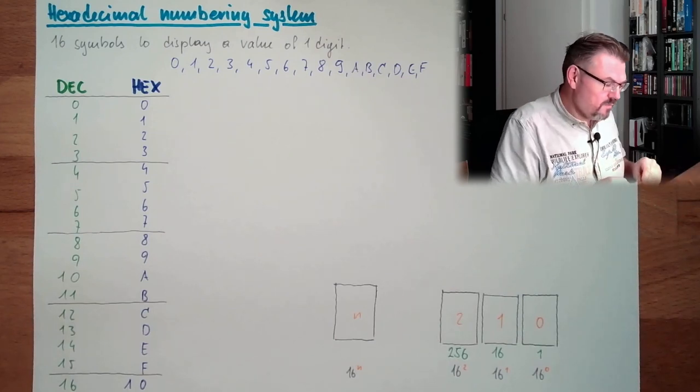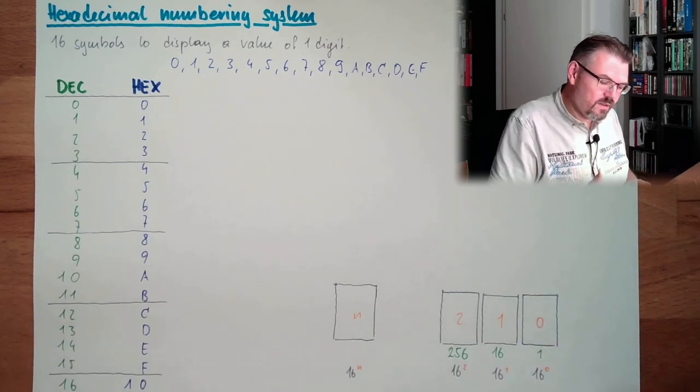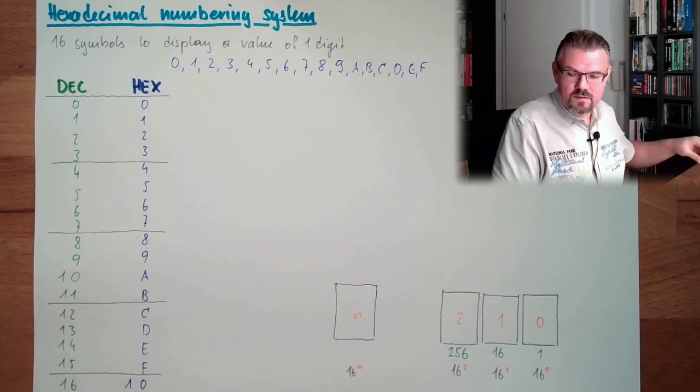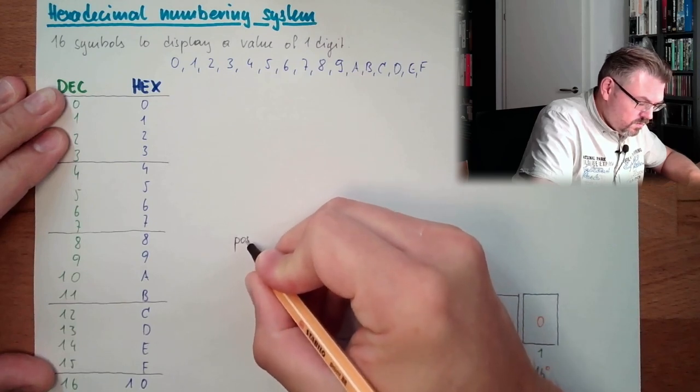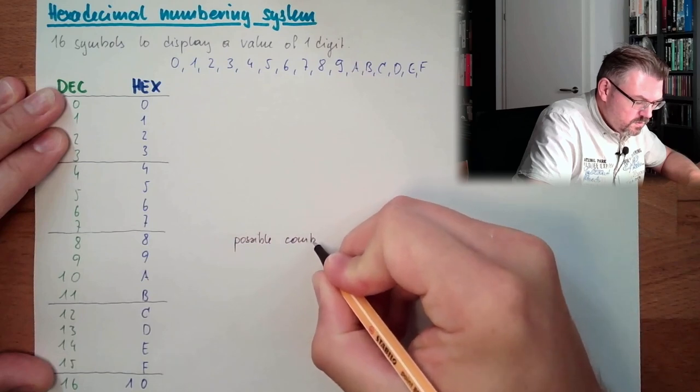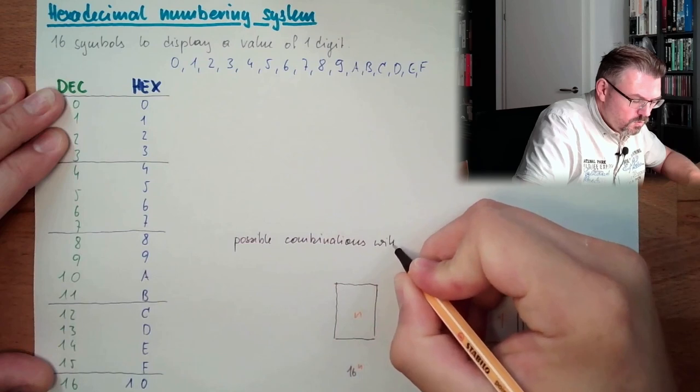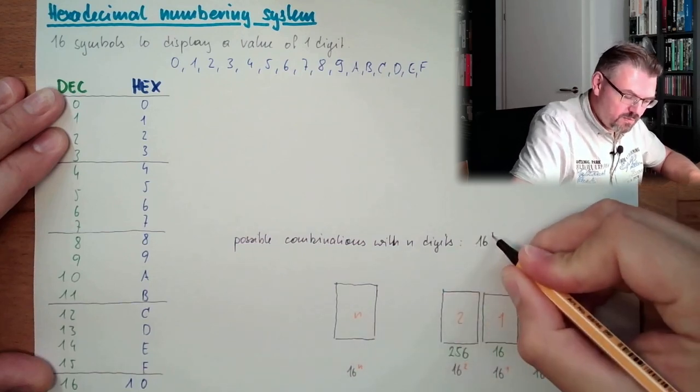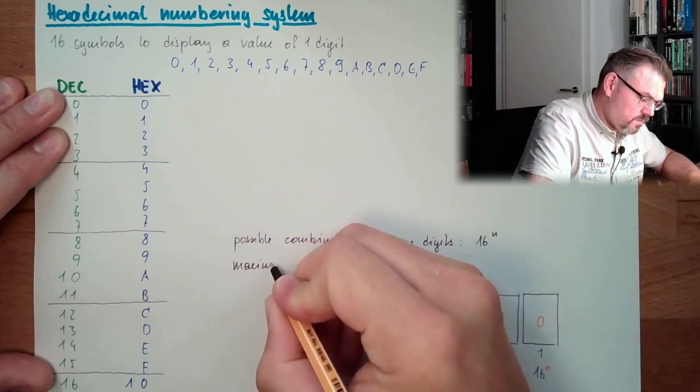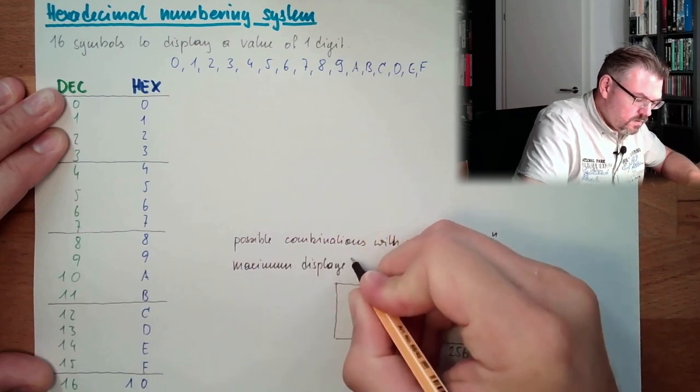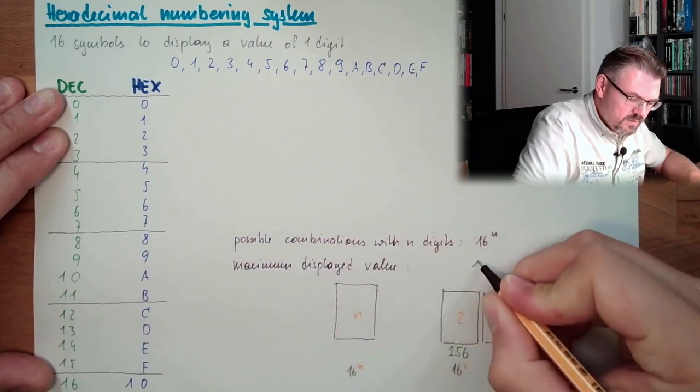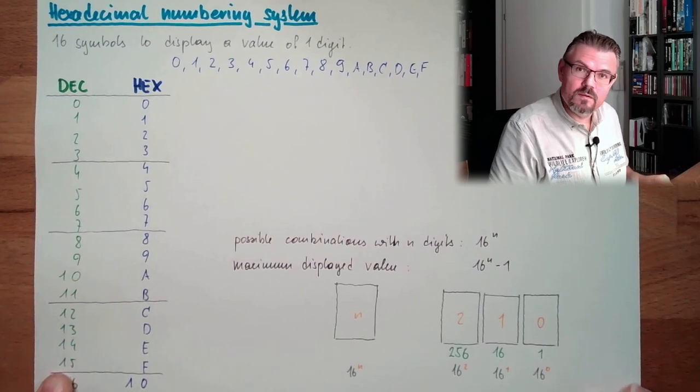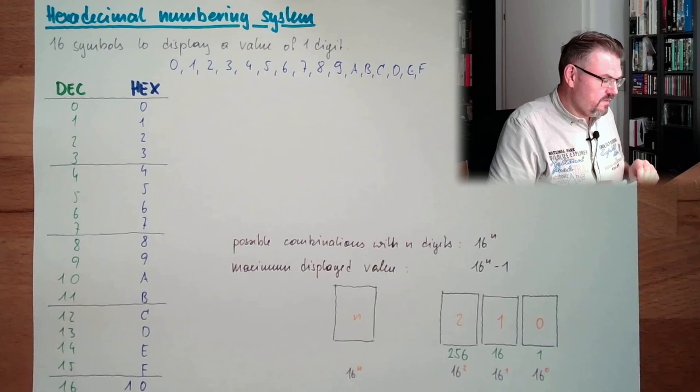So what is the highest possible number? Or the combinations? Always 16 raised by the power of n. These are the combinations, numbers possible with n digits. We have 16 raised by the power of n minus 1. Here, 16 combinations if n is 1, and maximum is 15. And this is how this is working.